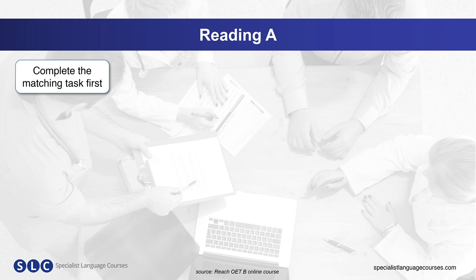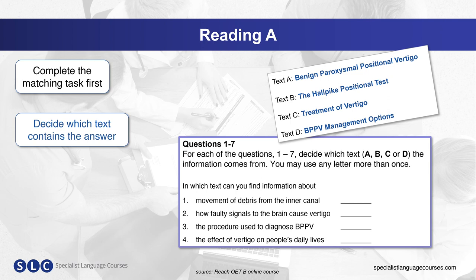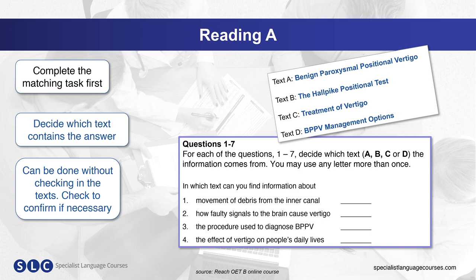You should complete the matching task first, as this activity will give you more insight into the kind of information in each text and it will prepare you for the other tasks. For this task, you should read each description in turn and decide which text contains the answer. Use the headings and your knowledge of what is in the text to help you decide. A lot of the time it can be done without even looking at the text, but you can check quickly to confirm if necessary.